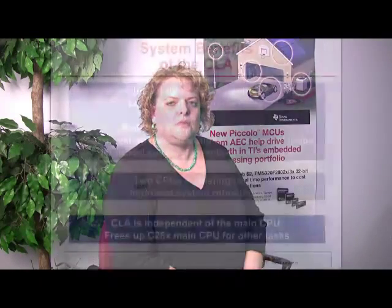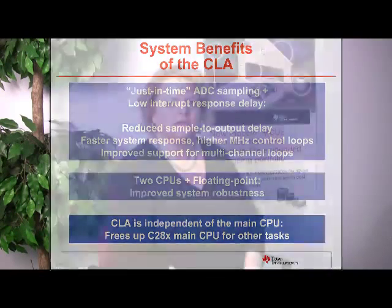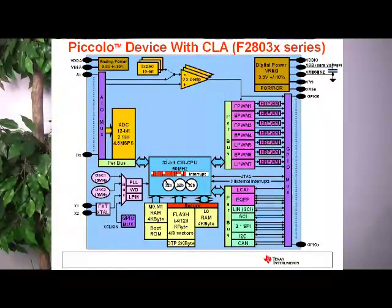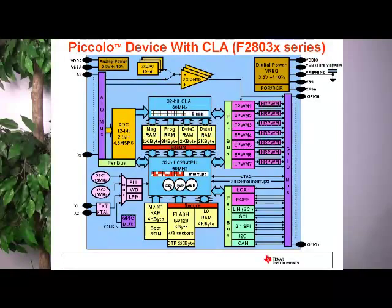Since the CLA can take over the time-critical control loops, the CPU won't be as bogged down and can handle other tasks such as diagnostics and communication. As you see here, with the C28X running at 60 MHz, it's constantly taking interrupts and is very busy — really overloaded. But when we introduce the CLA and offload some tasks to it, the C28X is not quite as busy anymore and can do more.